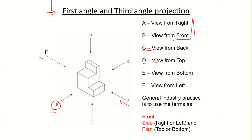The six directions form six different types of views: right, front, back, top, bottom, and left. The general industry practice is that the front view is common to both first angle and third angle projection. Using the right view as the side view and the top view as the plan forms the third angle projection. Using the left and bottom views with the front forms the first angle projection method.